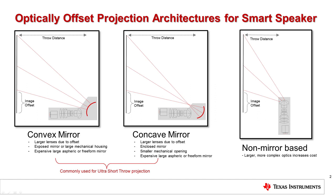Image offset is required for the optical rays to clear the lenses and mechanics after reflecting from the mirror toward the image plane. This image offset can be achieved by shifting the digital micromirror device, also known as the DMD, and designing the projection lens for a larger field. This results in larger, more complex optics in addition to the optional curved mirror. It is important to note that these projection architectures allow for a rectilinear distortion-free image.